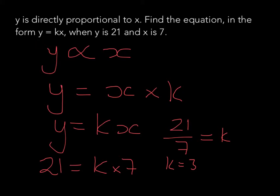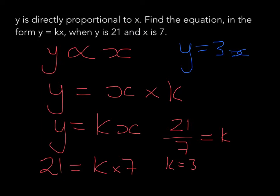Once we've got k, we rewrite the equation with our k value in. So the equation is y equals 3x. This links y and x together — these look very familiar from straight-line graphs, solving equations, or substitution. That's basically what direct proportion is: finding the equation and the multiple that links the two variables.